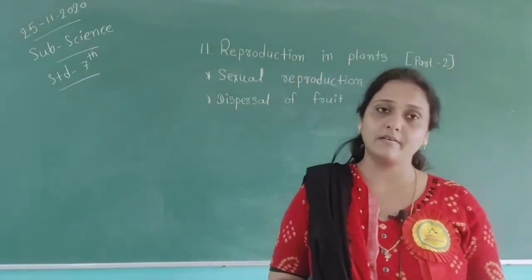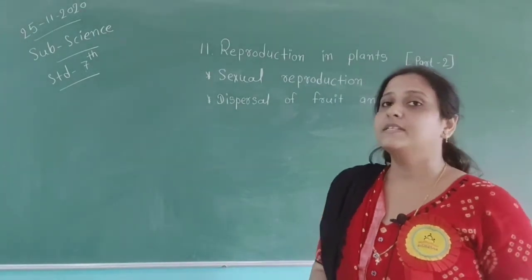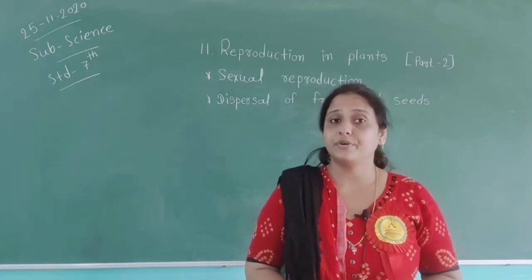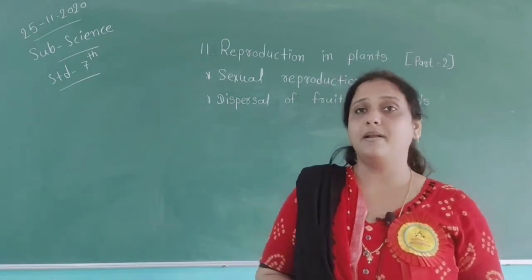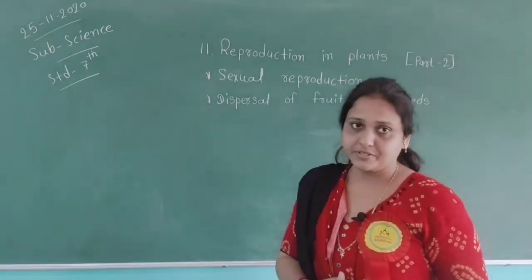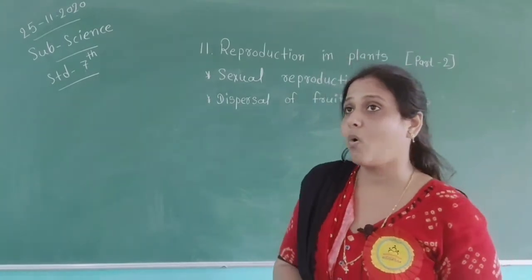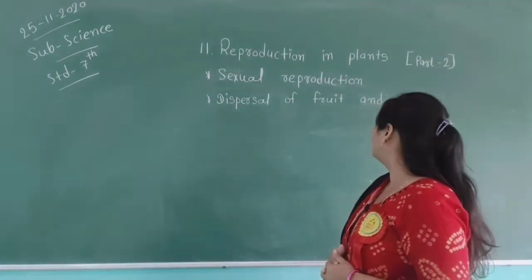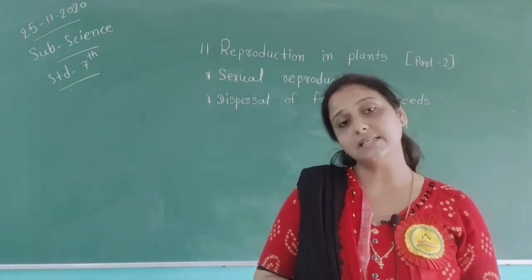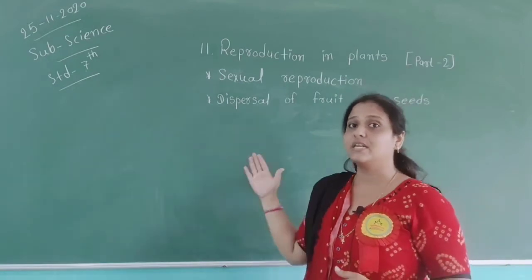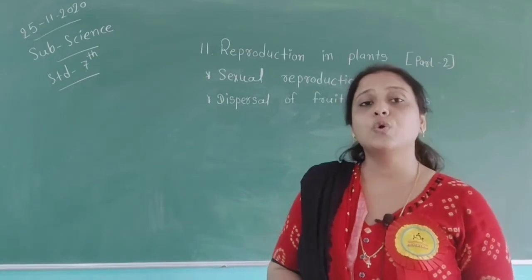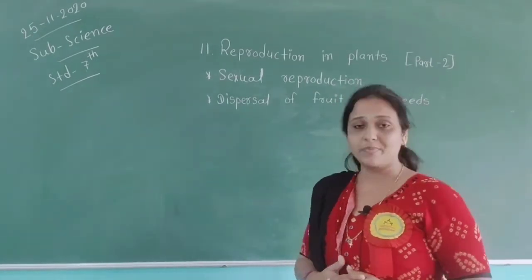Hello students, we are here again with chapter number 11. In our previous session we discussed about reproduction in plants. Today in this session we discuss about sexual reproduction in plants, dispersal of fruit and seeds, types of agents doing dispersal, and types of reproduction in sexual reproduction.